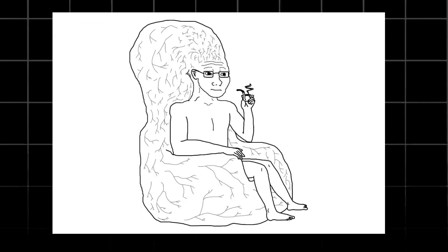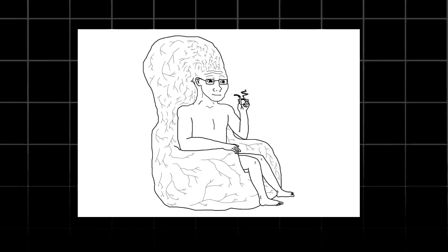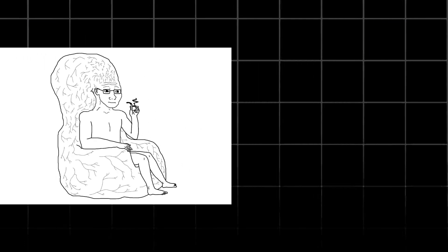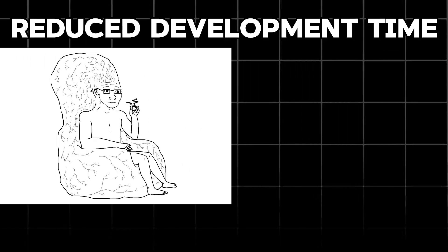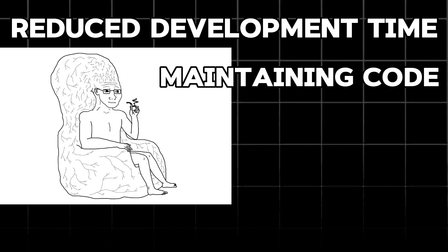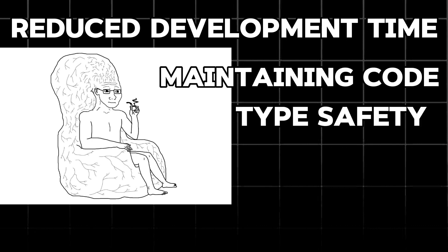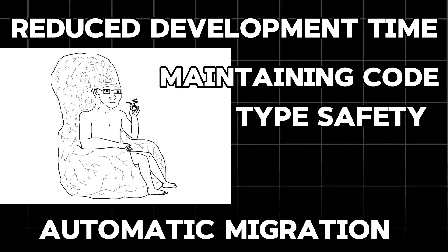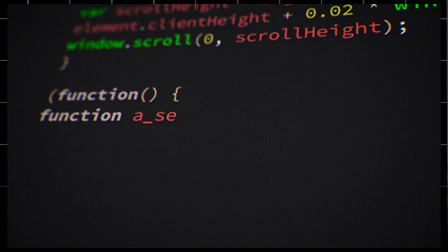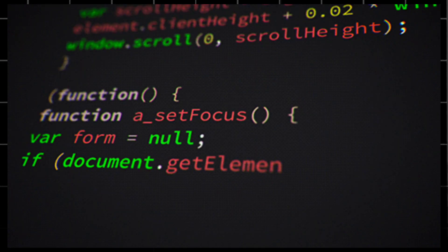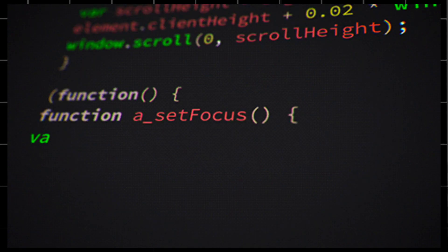So what does Prisma buy you? Here are some benefits: reduced development time, improved code maintainability, strong type safety, and automatic migrations. Prisma empowers you to build data-driven applications faster with less hassle.